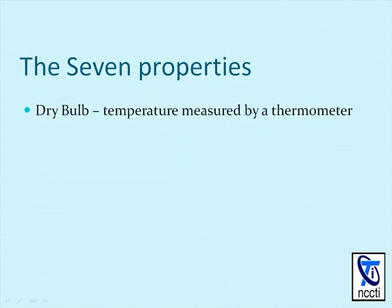I'm going to briefly cover the seven properties of the psychometric chart, starting with dry bulb. The only trick to this chart is to understand how each property is represented on the chart.